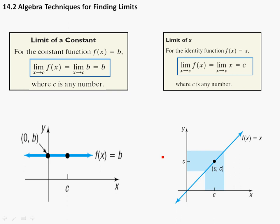What they're trying to say here is if you have a straight line, then the limit will be whatever value that straight line is, regardless of where you are. So if I'm coming from here, I'm going to end up at that point, and if I'm coming from here, ending at that point. As this value gets closer and closer to C, notice that you end up on this spot over here.